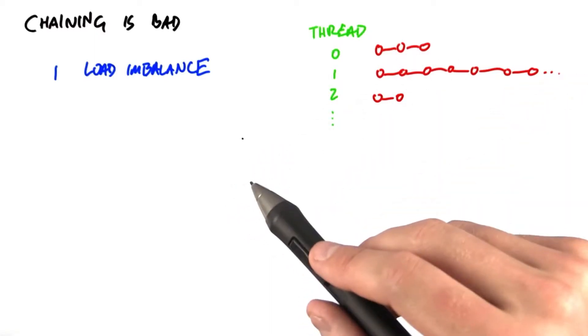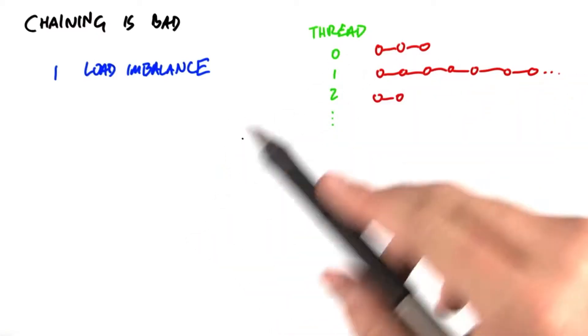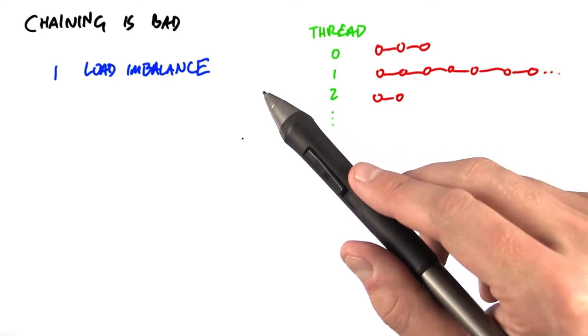So let's think about how chaining would behave in a parallel setting. For construction, that means we have many items to put into the hash table, one per thread.